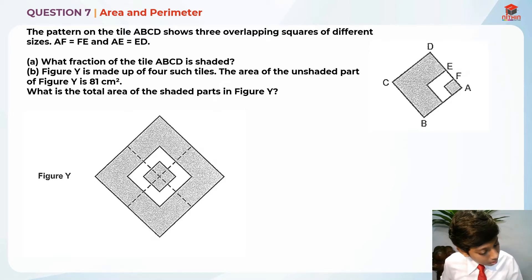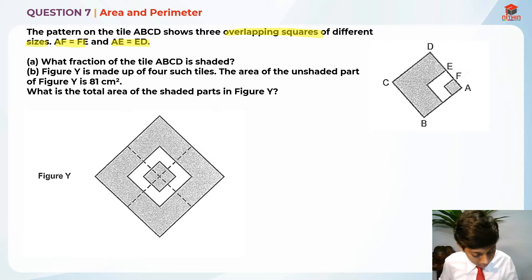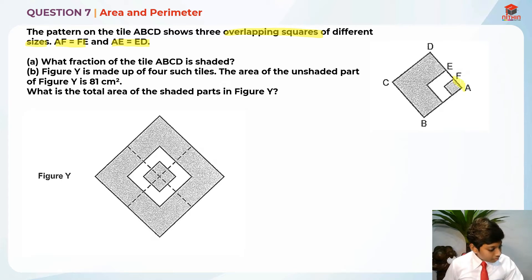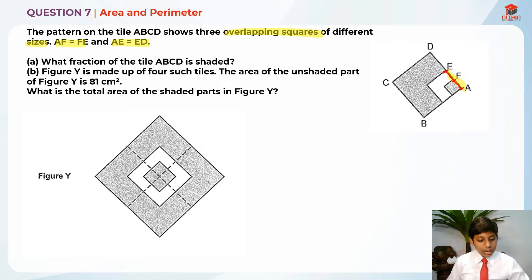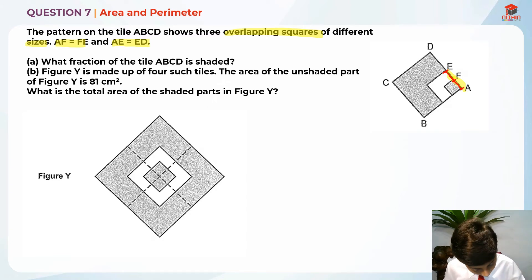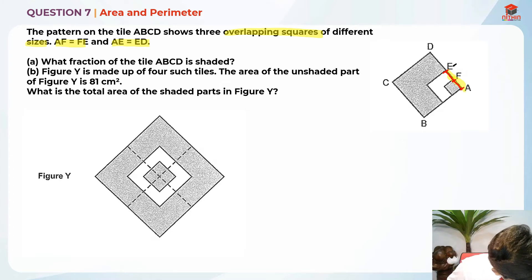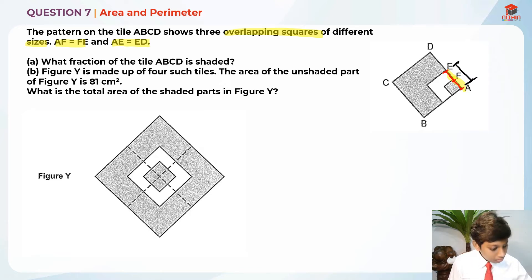The pattern on tile ABCD shows overlapping squares of different sizes. AF is equal to FE and AE is equal to ED — this will help us solve this question. So AF is equal to FE means this length here equals this length here, and AE — this whole length from here all the way to here — is equal to ED, so from here to here.